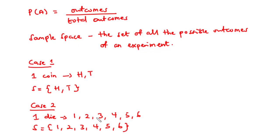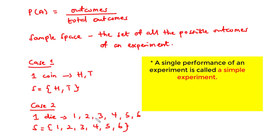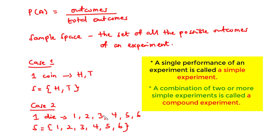In each of the previous examples, the experiment was performed once. A single performance of an experiment is known as a simple experiment. Many experiments can be considered as combinations of two or more simple experiments, and we call this a compound experiment. Now let's consider the third case.